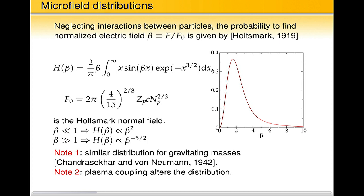The Holzmark distribution is expressed — if one neglects interaction between different particles — in a nice analytic form. One usually normalizes the electric field to a constant called the Holzmark normal field. If you forget the numerical prefactor, the rest is obvious: the typical electric field is Coulomb's law with the charge of the perturber divided by r squared, where r goes as density to the minus one-third — the typical interparticle distance. The Holzmark distribution peaks at about 1.6 in units of the normalized field. The asymptotics are quadratic for weak fields and go as field to the power minus 2.5 for very strong fields. The strong-field asymptotics follow from a binary approximation with a single perturber using Coulomb's law.